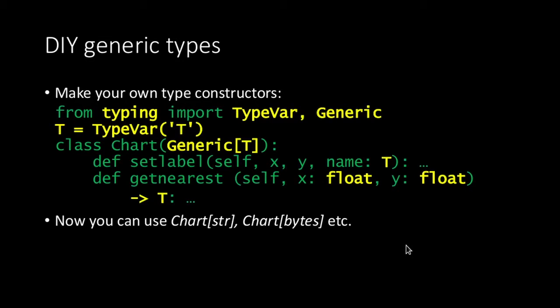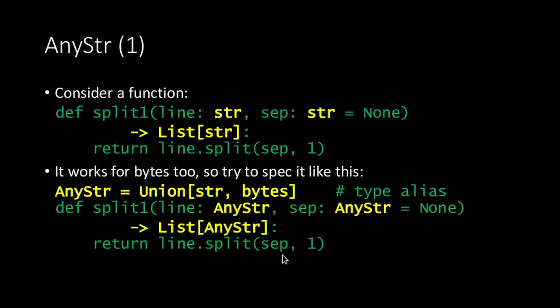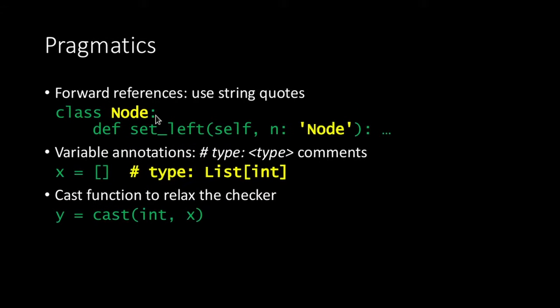There's a way to do generic types yourself — you want your own type with something generic and can then use it parameterized with your chosen type. There's an example for strings because in Python 3 there's an issue: there's bytes, string, and Unicode string. So there's a union for them called AnyStr. There's also a forward reference issue — when a node is not yet defined until the end of the class, the way to handle that in type hints is to use a string in the annotation.